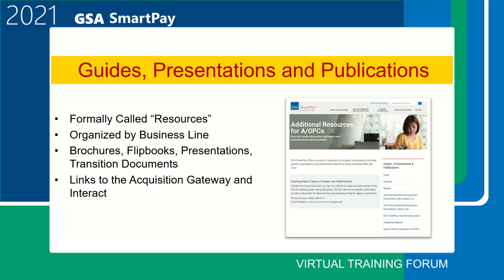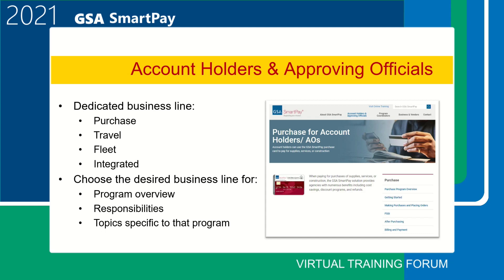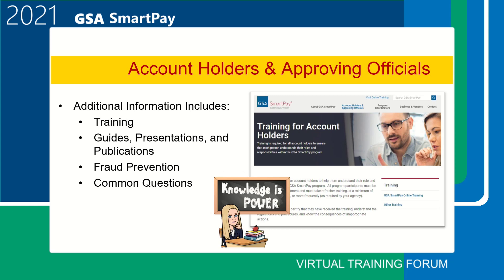All account holder and approving official specific information can be found under the account holder and approving official tab on the main top menu. From here, account holders select either purchase, travel, fleet, or integrated. Topics discussed in this section include program overview, responsibilities, and other business line-specific information. Under this tab there is also information about training, resources such as guides and publications, fraud prevention, and common questions account holders or approving officials may have.